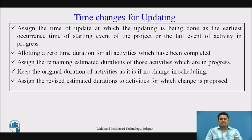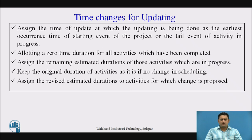The time changes for the updating are: first, assign the time of the update — the date on which the updating is to be done. That will be the earliest occurrence time of the starting event of the project, or the tail event of the activity which is in progress. Allocate zero time duration for the activities which are already completed, and assign the remaining time estimate durations to the activities which are in progress or change the activity duration as per requirement.